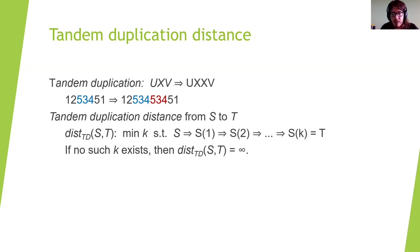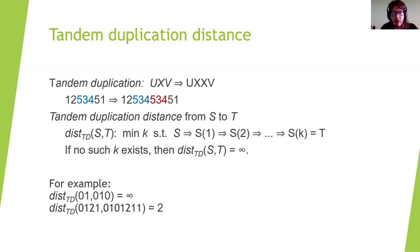If no such k exists, then we say that the dist_td between s and t is equal to infinity. For example, the dist_td between the strings 0, 1 and 0, 1, 0 is infinity because no matter how we choose our duplication, we cannot go from the string 0, 1 to the string 0, 1, 0.